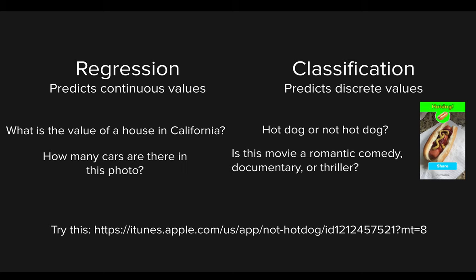One example of classification is an AWS app called HotDog or NotHotDog — you can classify whether an image is a hot dog or not a hot dog. The label or output is not a number; we're just predicting between two discrete categories. Another example: is this movie a romantic comedy, documentary, or thriller? There's no numerical value — we're predicting a category. So: regression is more quantitative, classification is more qualitative, categorical, and discrete.